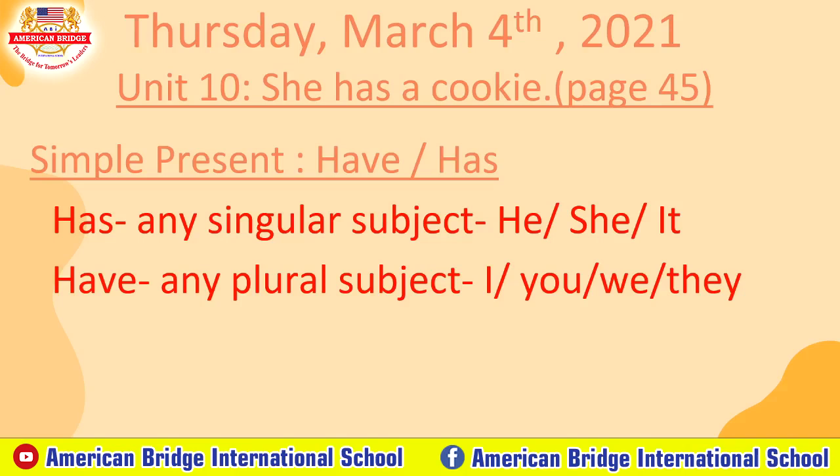Now let's look at our whiteboard. As you know, 'has' we use with any singular subject — he, she, and it — and 'have' we use with any plural subject — I, you, we, they. As you learned from yesterday, in present simple we have three forms of usage: informative, negative, and question. But yesterday we learned just the positive form, which we call informative.